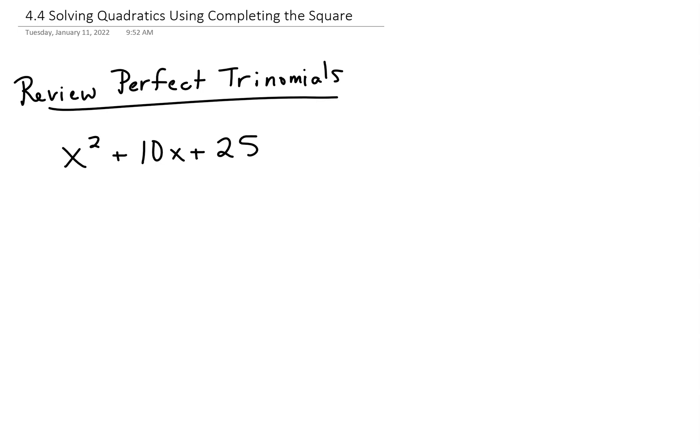And the special thing about a perfect trinomial is that the two factors that you find that multiply to give you 25 and add to give you 10 are identical. So 5 times 5 gives you 25, and 5 plus 5 gives you 10, which means that this right here is a perfect trinomial. And when we factor it, the two factors are the same, x plus 5 times x plus 5.